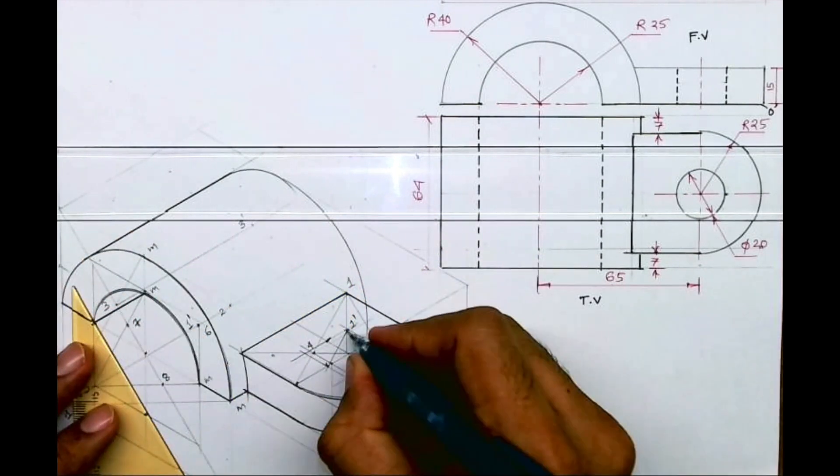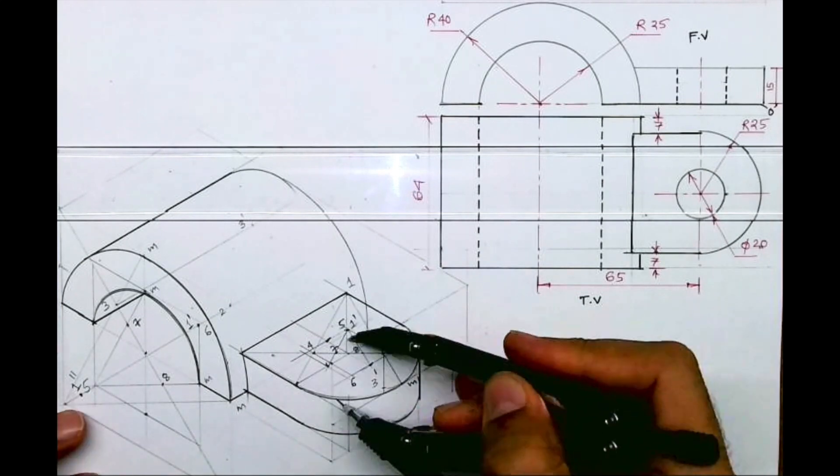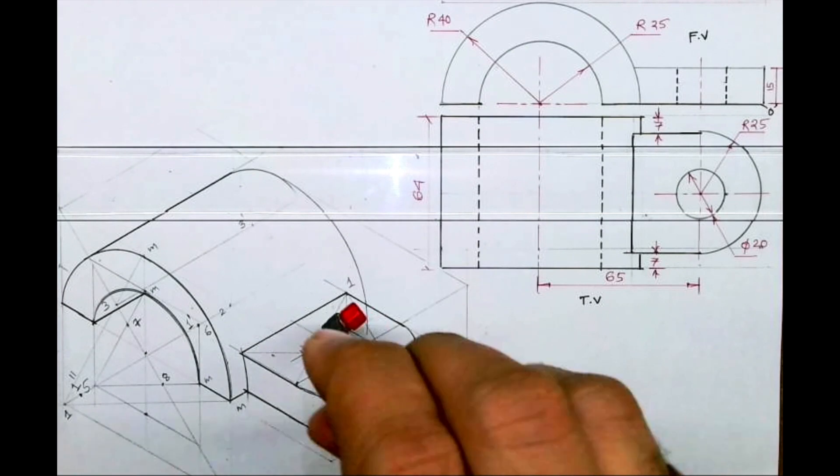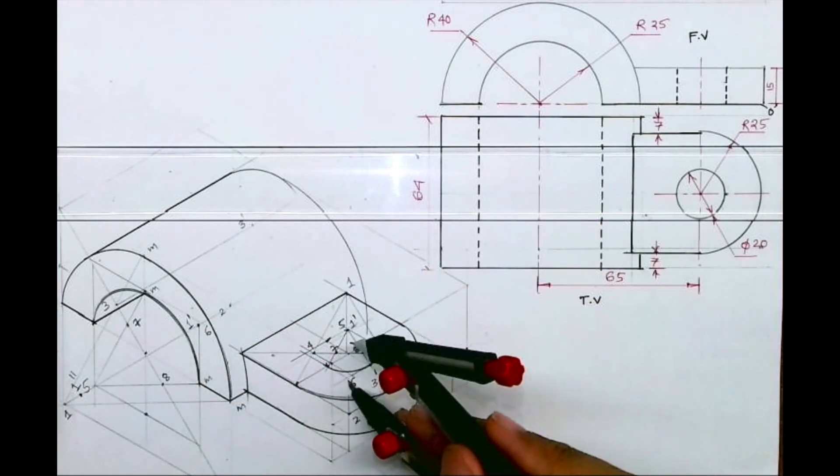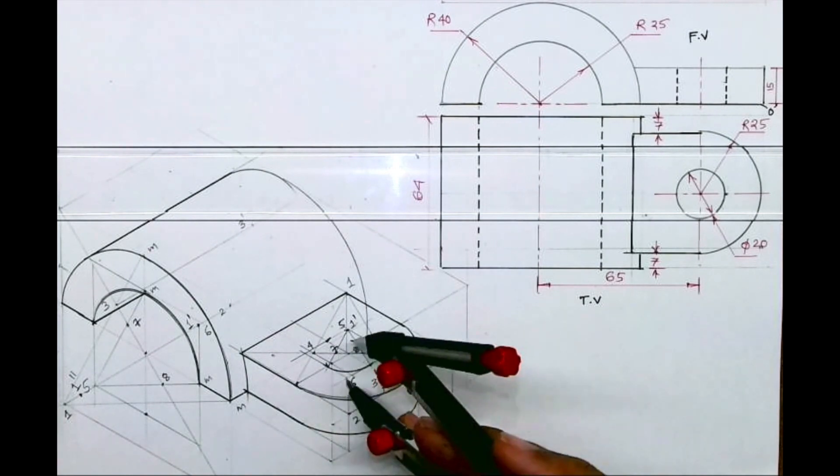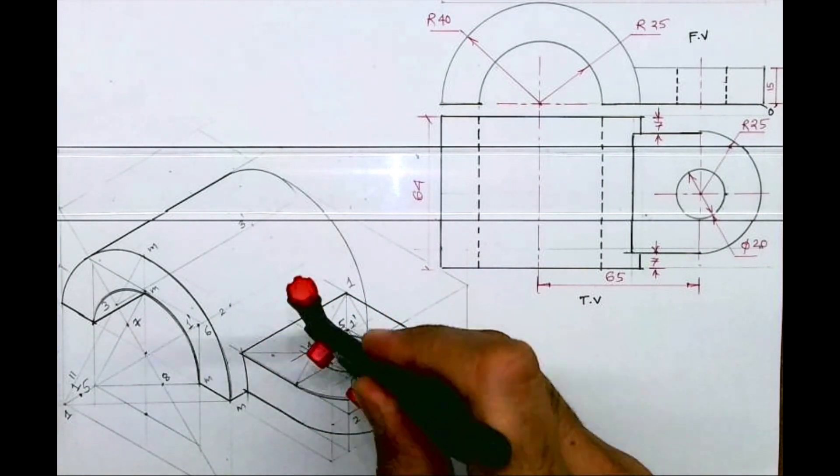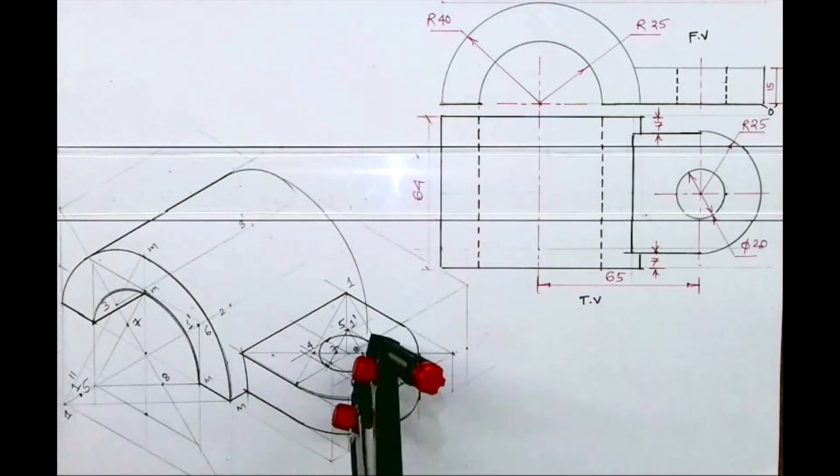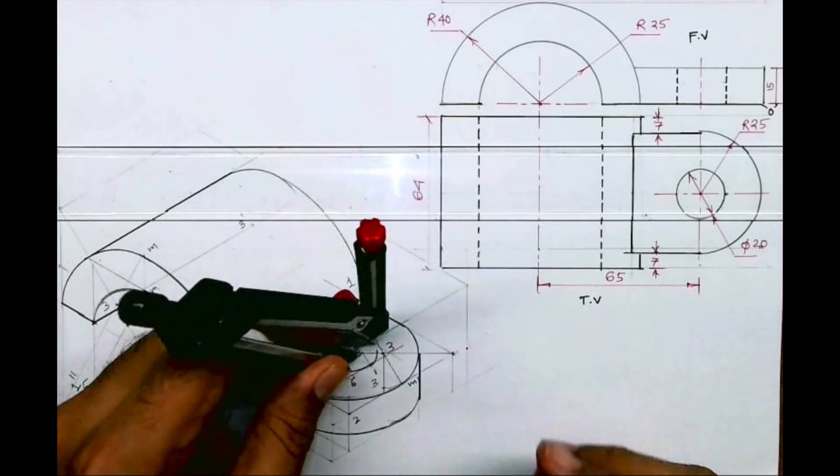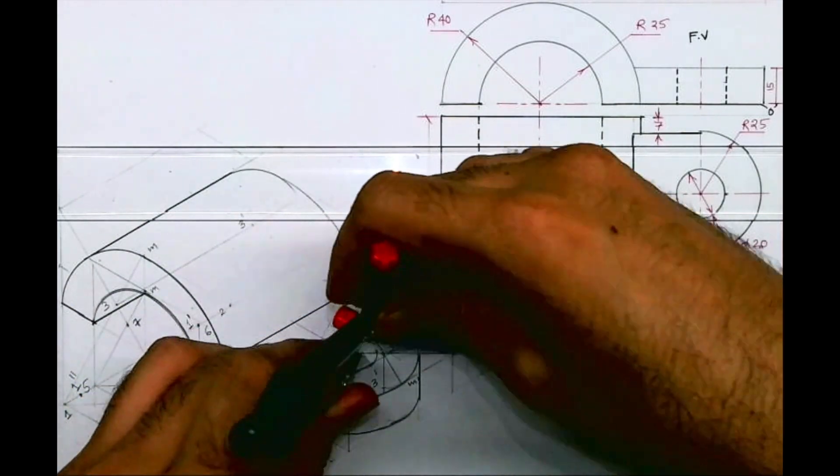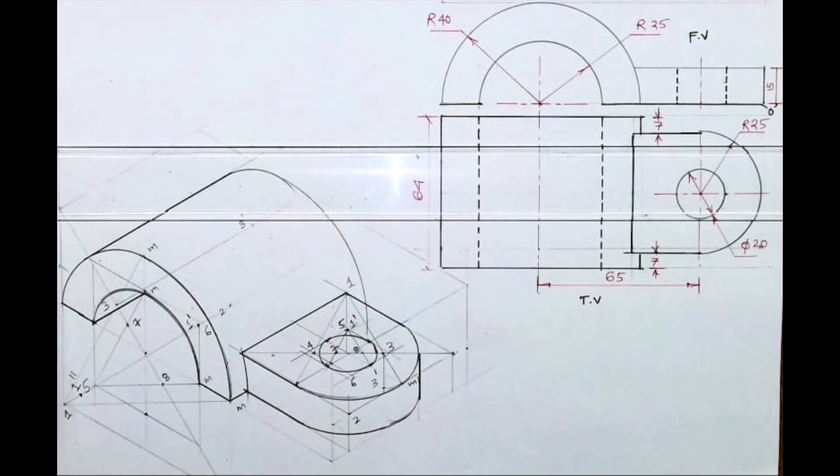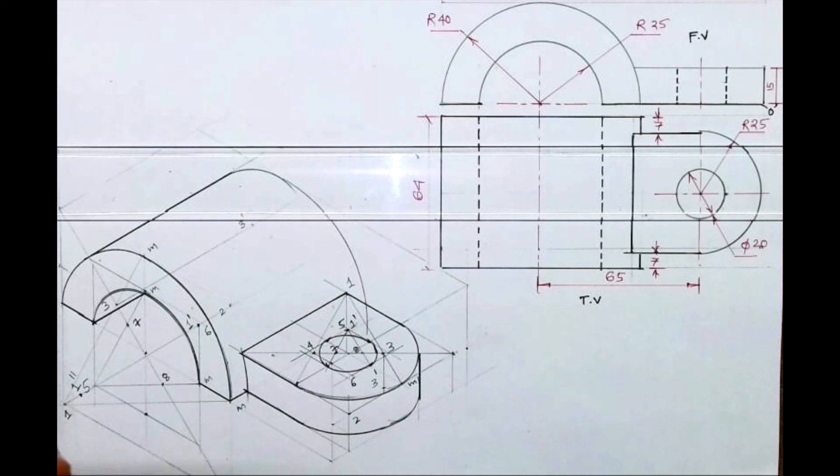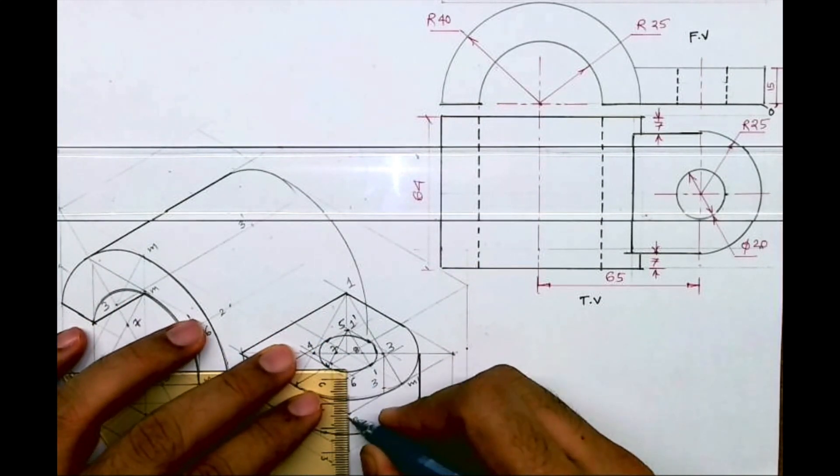You draw arc. So this is five to M, six to M, then seven to M, and eight to M. And we can check depth also. Depth is 15 and diameter is 20. So we will just check. We will go down by 15, we will mark six dash.